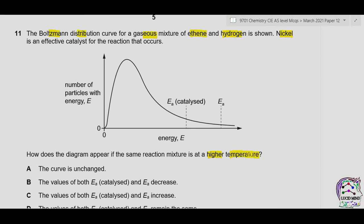Higher temperature increases the average kinetic energy of molecules, so now more molecules have activation energy to convert into products. As the area under the curve always remains constant, the curve will be shifted accordingly — lower peak with a broader tail to the right.